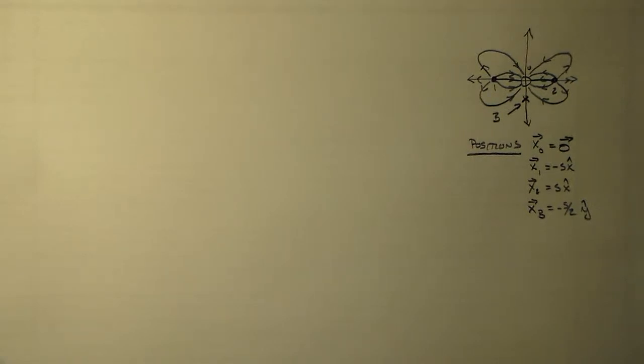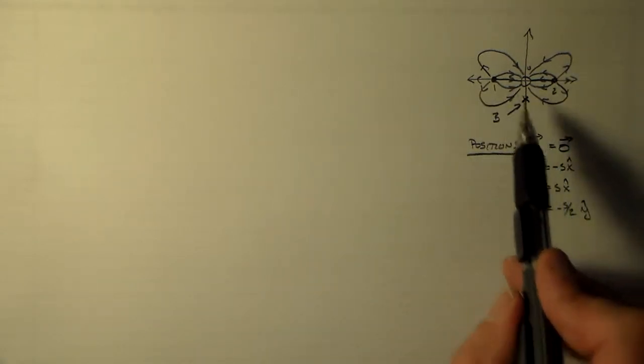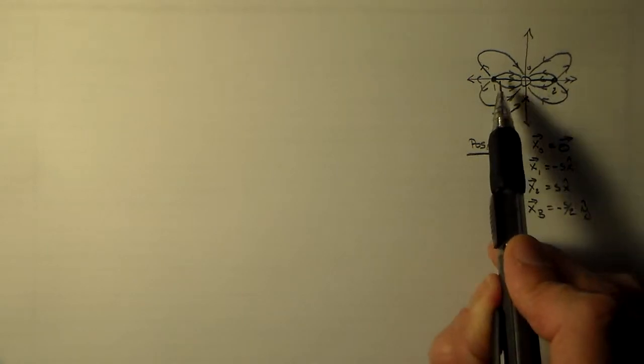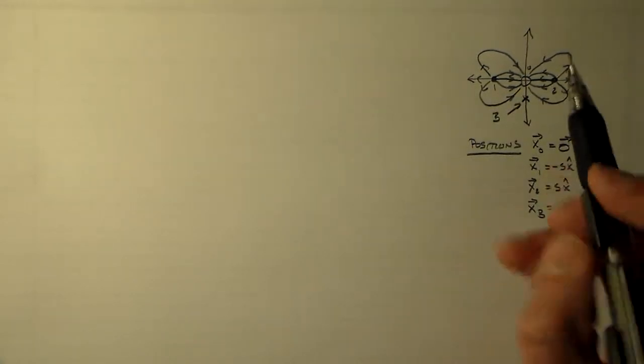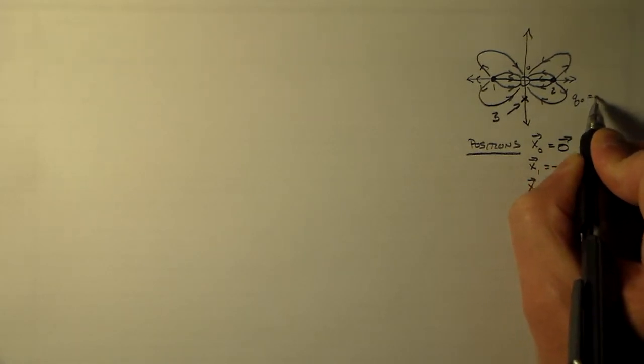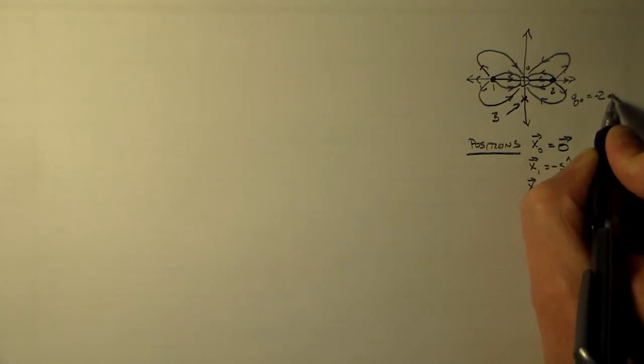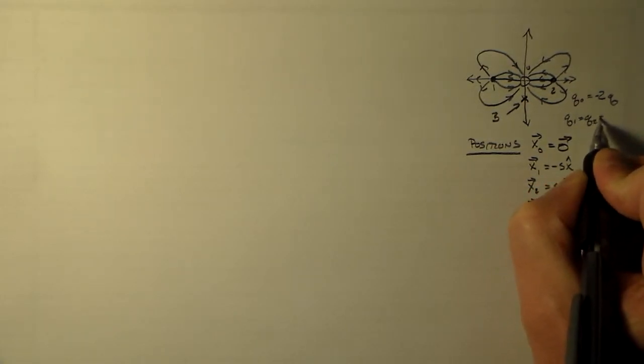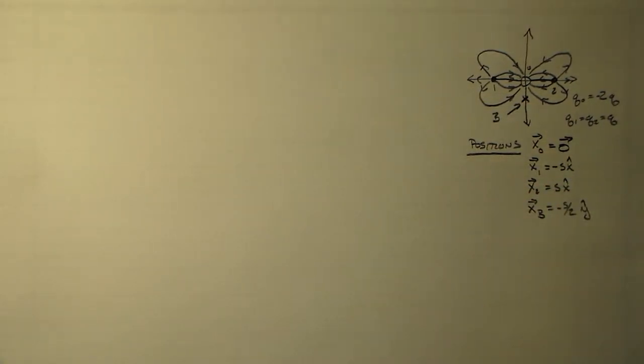Okay, so what could be better than doing this one more time, right? So we've already gone through, we've set this problem up. We've got three charges, 0, 1, and 2. The charges are different. Q0, we say, is twice the charge of the other two. So Q1 equals Q2 equals Q. And it has the opposite sign.